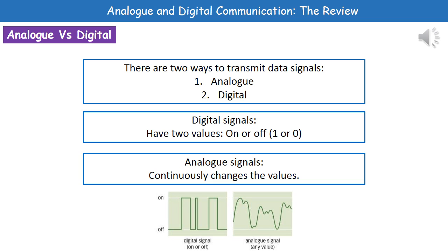Digital is nice and simple — it's just these blocks because it's either on or it's off. And then the analog signal, because it can take any value within a given range, it has that much more wavy pattern.